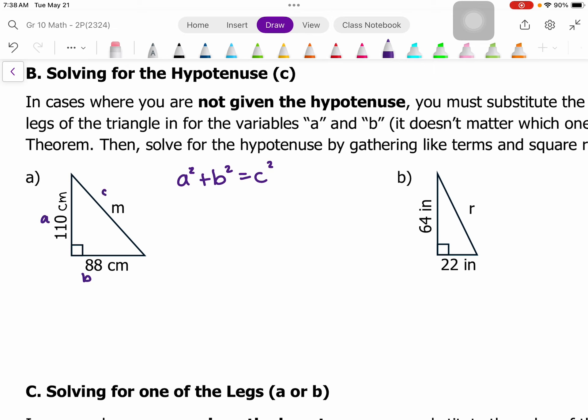So now I'm going to fill in values for each of those. So if a is 110 and then I need to square it. So 110 squared plus 88 squared equals, and c in this case is called m, so I'm going to say equals m squared.